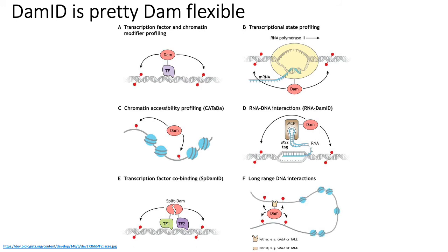You could also create a fusion protein between components of RNA Pol2 and DAM so that you can observe where transcription is happening, because you'll see methylated adenines in the GATC motif wherever RNA Pol2 is transcribing. Additionally, DAM has a strong preference for methylating accessible adenines in the GATC motif, so GATC motifs in regions of the genome wrapped up in histones are much less likely to be methylated. In some sense, you can use DAM to identify open chromatin regions, which are generally associated with active transcription.